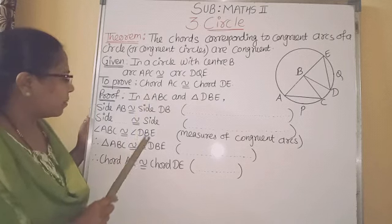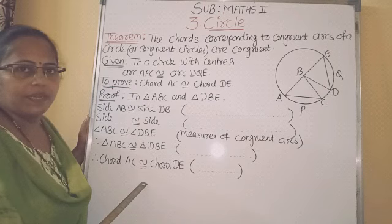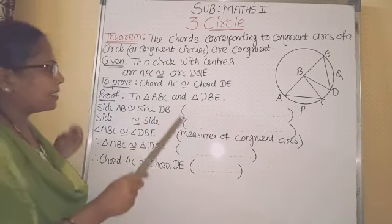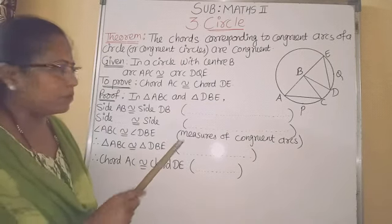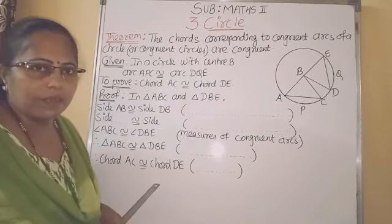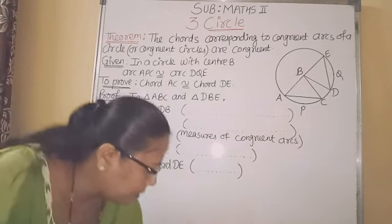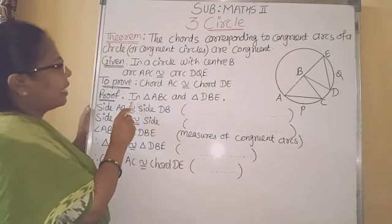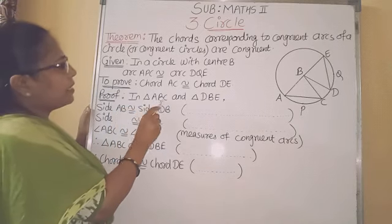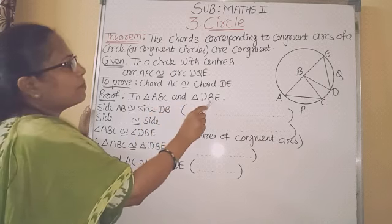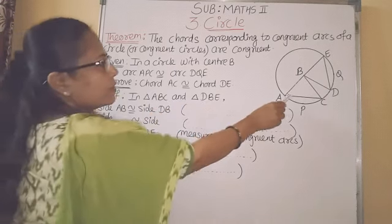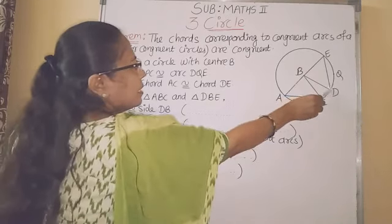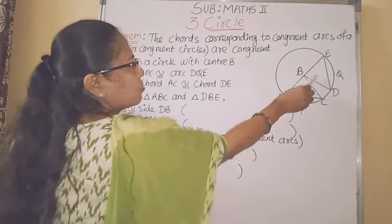To prove this, we have to complete this activity. The proof is given in activity-based form — this type of proof may come in the exam to complete. So, let us complete the activity. First statement: in triangle ABC and triangle DBE — observe these two triangles in the figure.